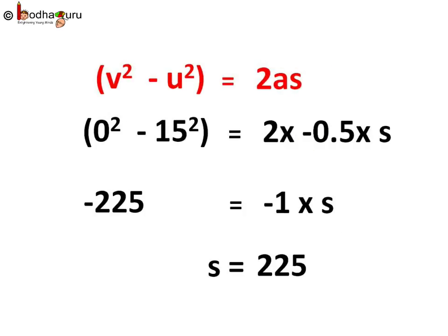Now how far will the train go in 30 seconds? It has to be less than 300 meter as the signal is 300 meters away. So now which formula should we use to find the distance?